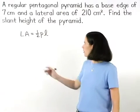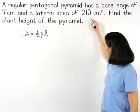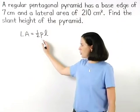We're given that the lateral area is 210 square centimeters, but we don't know the perimeter of the base.